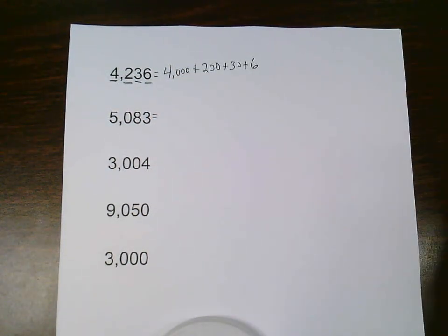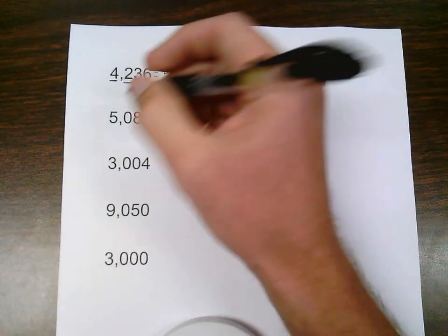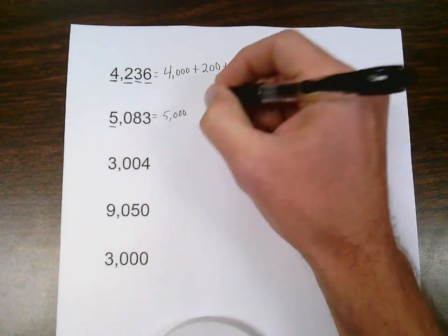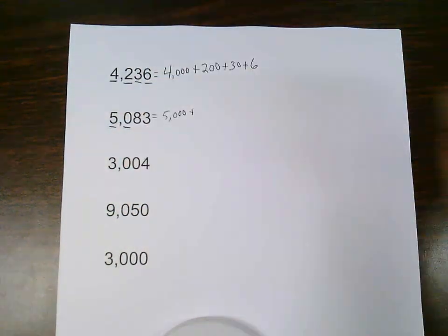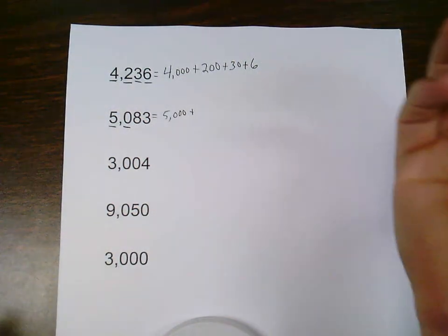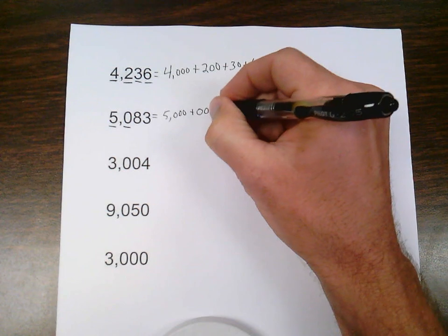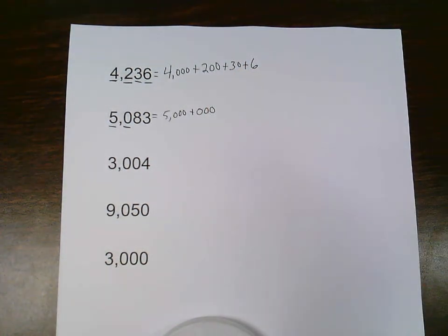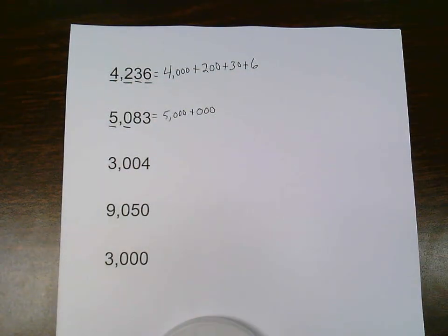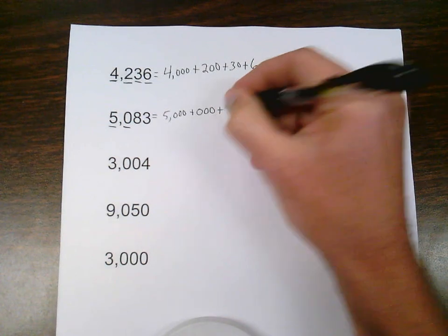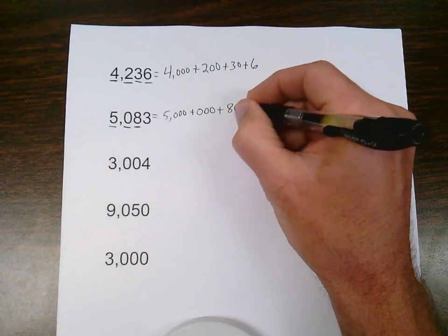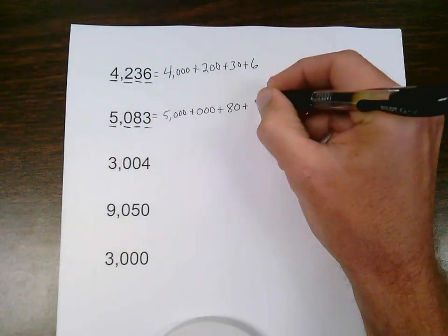On my next one, 5,083, I'm going to start off by giving the value of the thousands place. That 5 in the thousands place is worth 5,000. Adding it on to the value of the hundreds place. Now I have a zero in the hundreds place. So it's worth nothing, but I still want to put 3 zeros there so I keep my pattern. That allows me to make less mistakes. I always make sure I keep the pattern 4, 3, 2, 1 if I'm starting off with a 4 digit number. So I'm going to add it on to the value of the 8, which is in the tens place, so that 8 is worth 80. And add the value of the ones place, which is a 3.